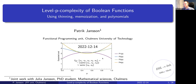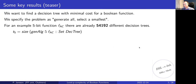For larger, more complicated boolean functions there are very often lots of different competing polynomials, but this seems to be the smallest n in the number of bits for which we can get the behavior that two different polynomials compete. This is joint work with Julia Jansson, a PhD student in mathematical science and also my doctoral student. There are 54,000 different decision trees possible for computing this FAC function.